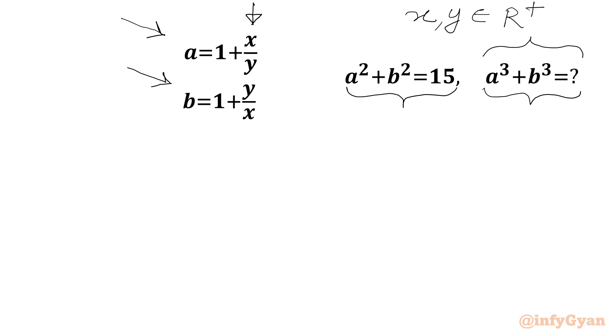Similarly for b, y over x must be a positive real number. 1 plus a positive real number is positive. We can conclude a and b are positive real numbers, cannot be negative.